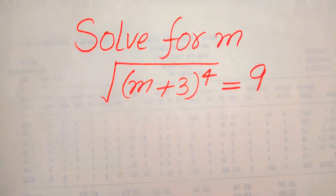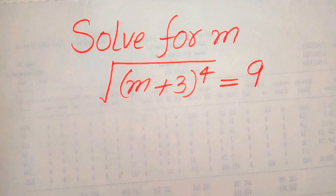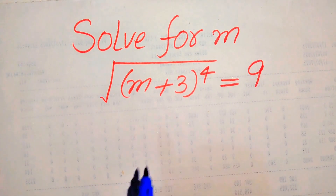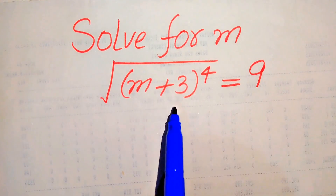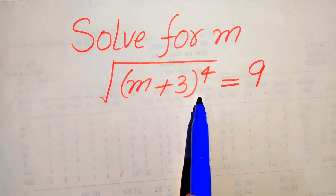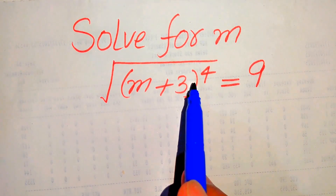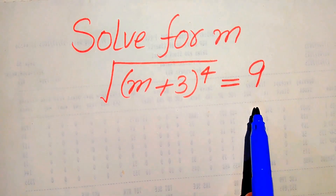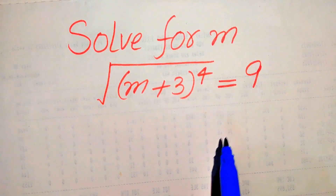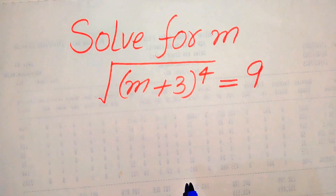Hello everyone. How to solve this problem for the values of m, if we have the square root of (m+3) to the power of 4, equals 9, and we solve this problem for the values of m.